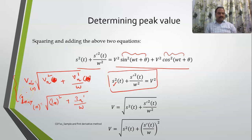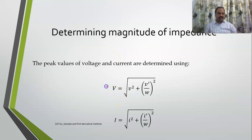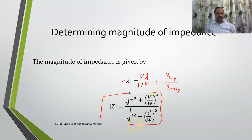This is the way we determine Vmax and Imax. If you know the maximum value, we can determine the RMS value by dividing by root 2. Once we have Vmax and Imax — the magnitudes of the maximum values of the voltage and current signals — we can determine the magnitude of impedance as |Z| = Vmax / Imax.